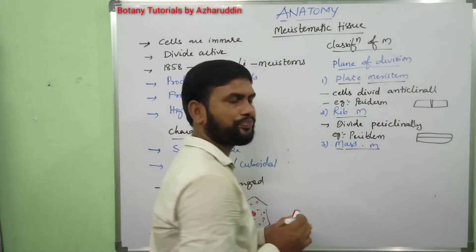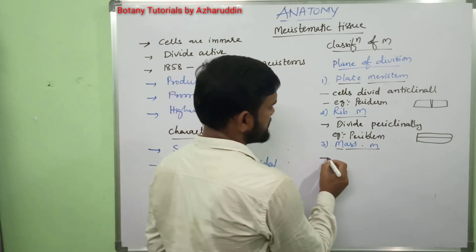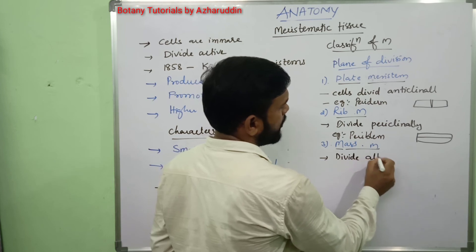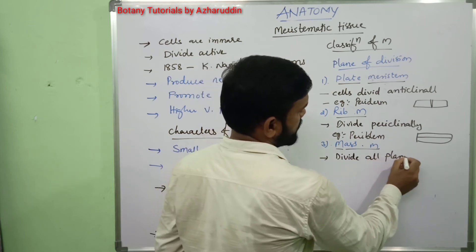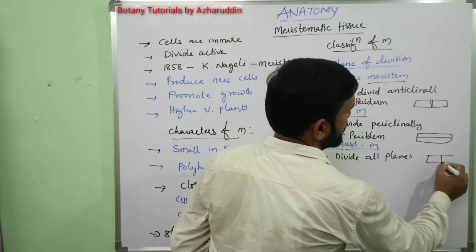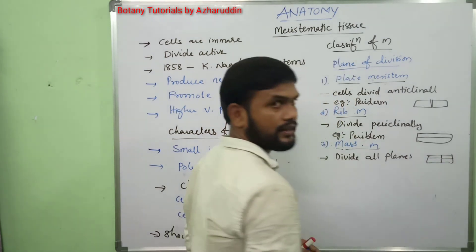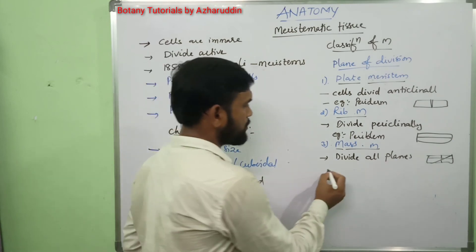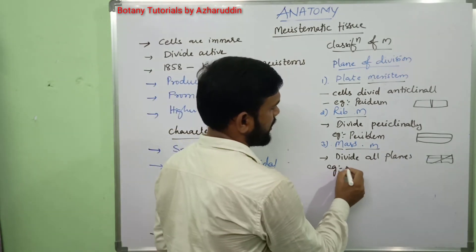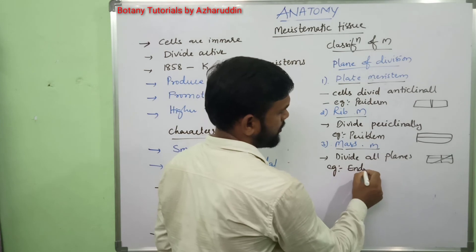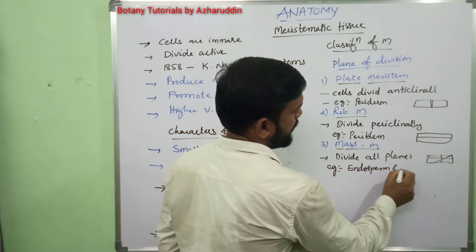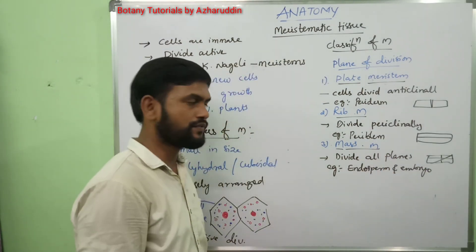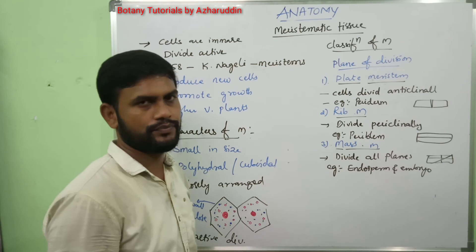In mass meristem, cells divide in all planes — they may divide periclinally, anticlinally, or obliquely. Examples for mass meristem are endosperm and embryo.